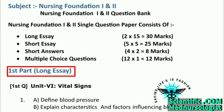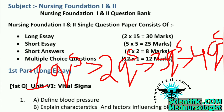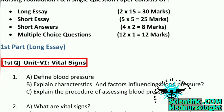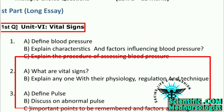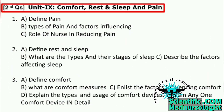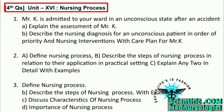The long essay part consists of mainly 4 standard questions, based on priority and possibilities of repeating — where the 1st standard question has more possibility of repeating than the 2nd, which has more than the 3rd, which has more than the 4th. Each standard question consists of only 1 unit. The 1st standard question is Unit 6 — Vital Signs; the 2nd is Unit 9 — Comfort, Rest and Sleep; the 3rd is Unit 15 — Health Assessment; and the 4th is Unit 16 — Nursing Process.